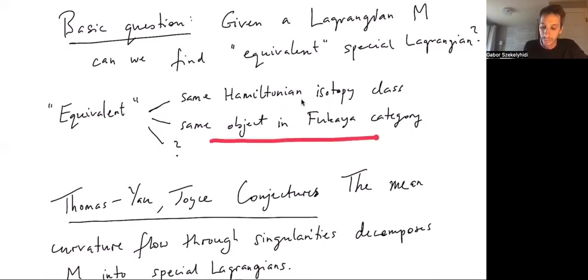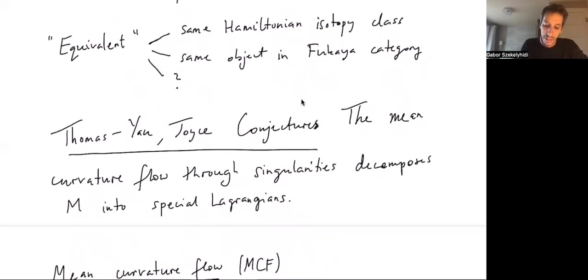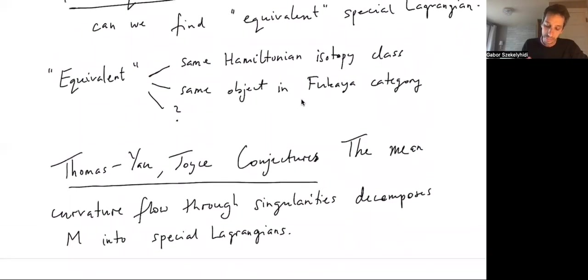Currently the equivalence class that we tend to study is that the two Lagrangians should define the same object in the derived Fukaya category. But this may also not exactly be the right thing, so we don't really know what equivalent should be.